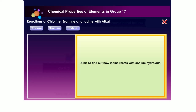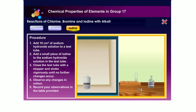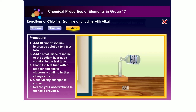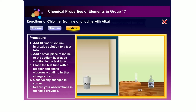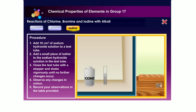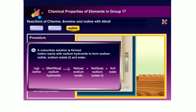Let us find out how iodine reacts with sodium hydroxide. Iodine reacts with sodium hydroxide to form sodium iodide, sodium iodate-1, and water.